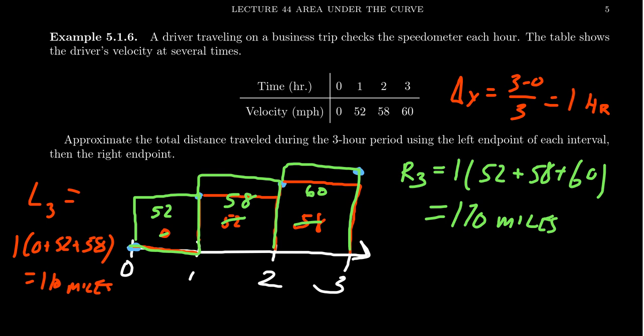We get an estimate he went somewhere between 110 miles, 170. If we do the trapezoid rule, T3, we'll take L3 plus R3 over two, which is 110 plus 170 over two. Let's see. You're going to get 280 over two. And once you cut that in half, you end up with 140 miles would be the estimated there.